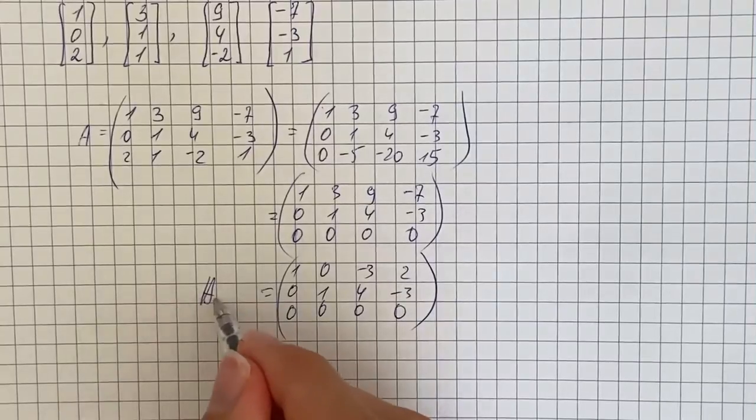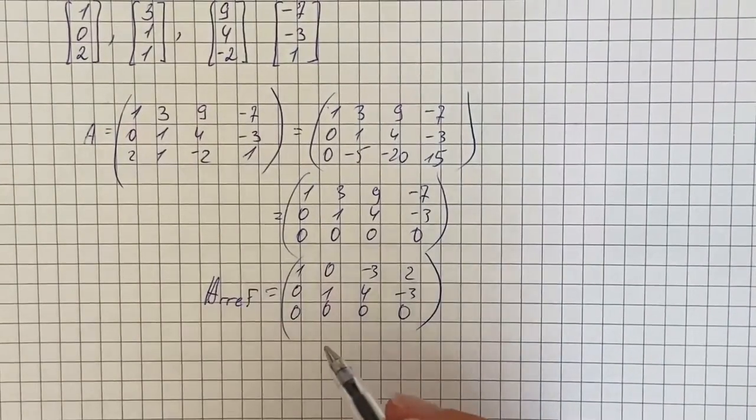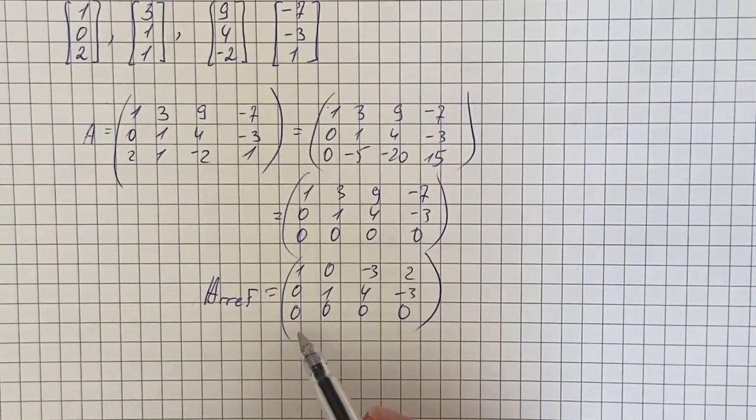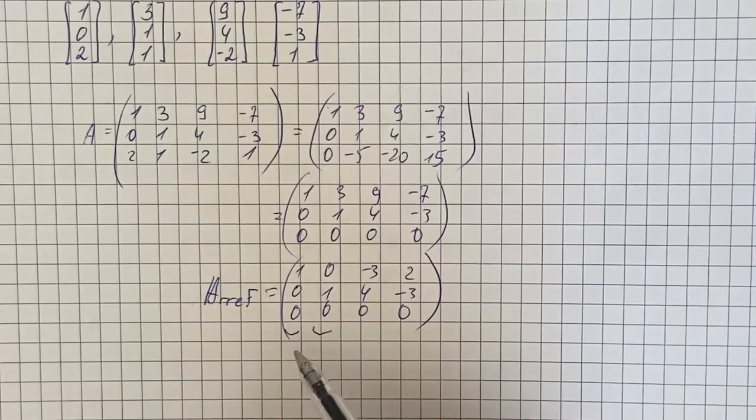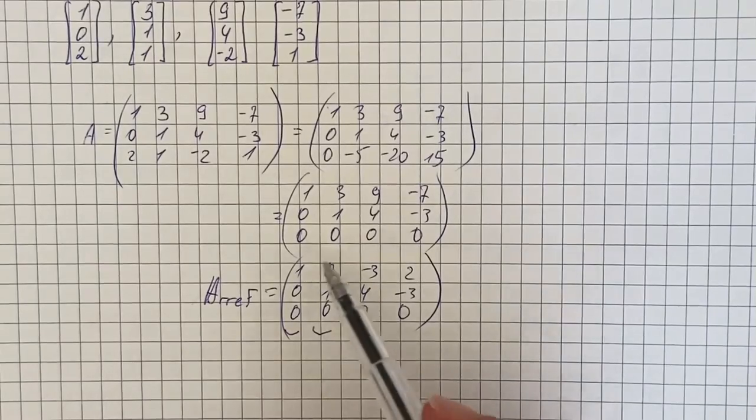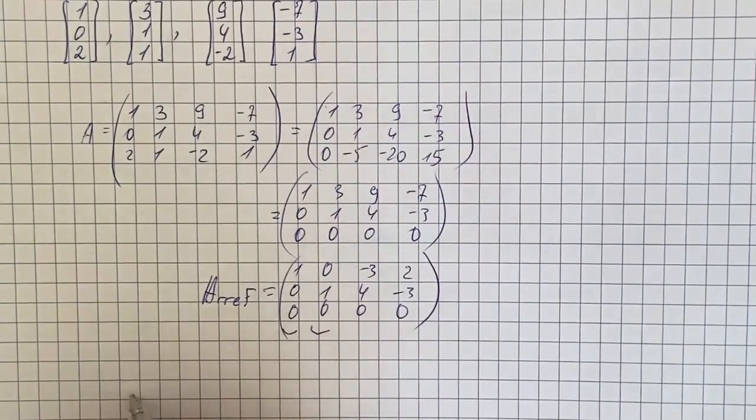So now we can see two pivot columns - this first one and the second. And therefore the dimension of the subspace spanned by these vectors is 2.